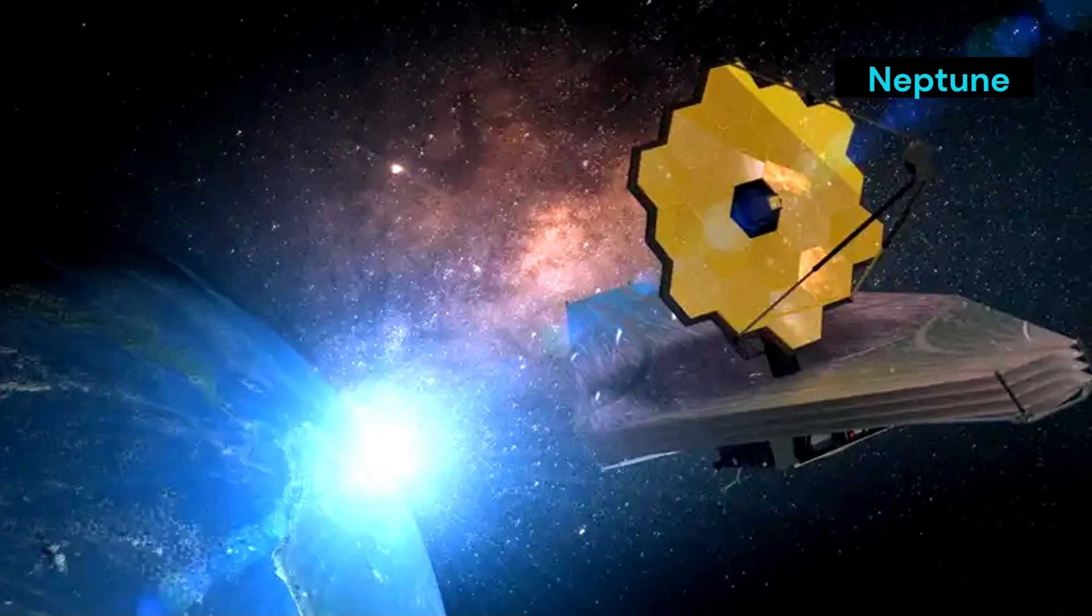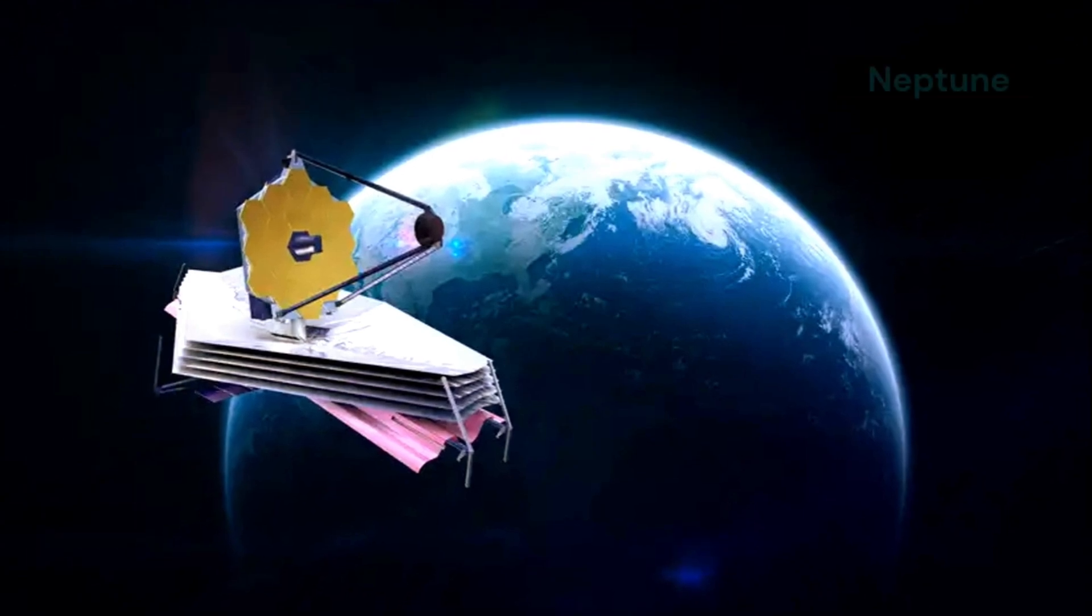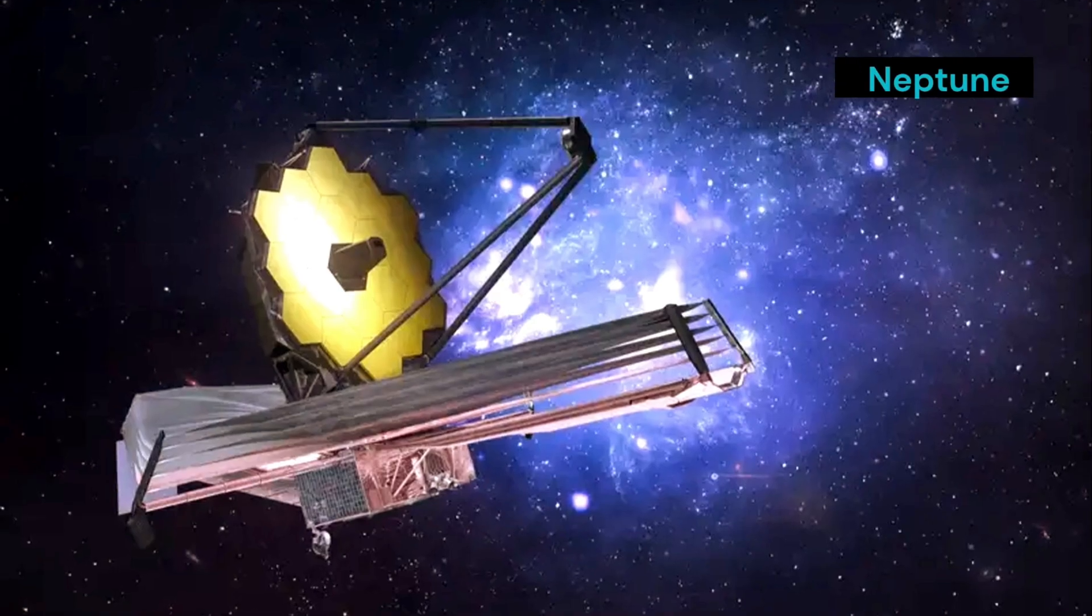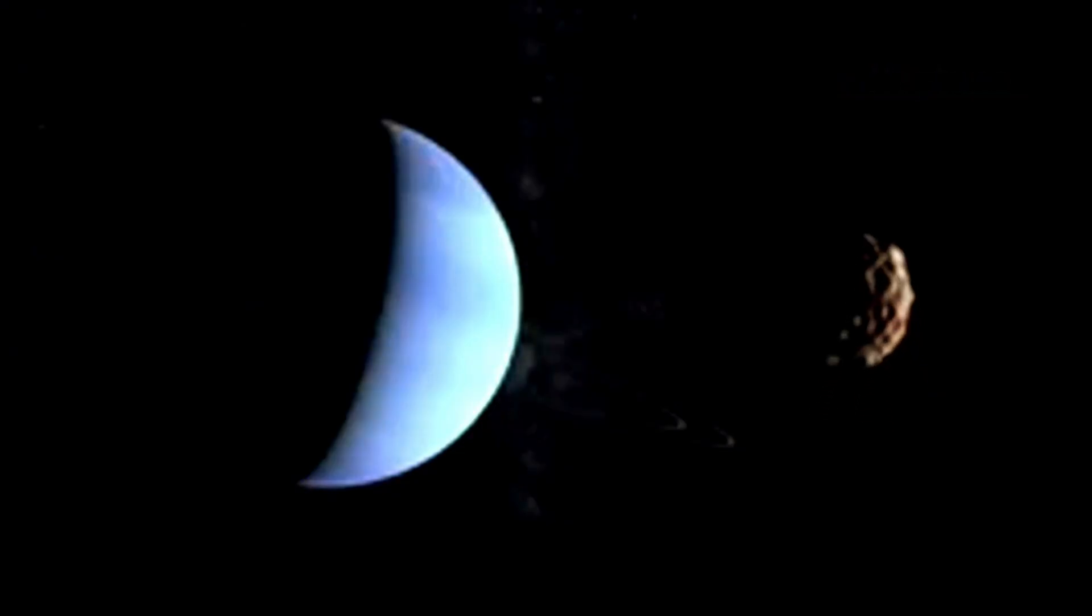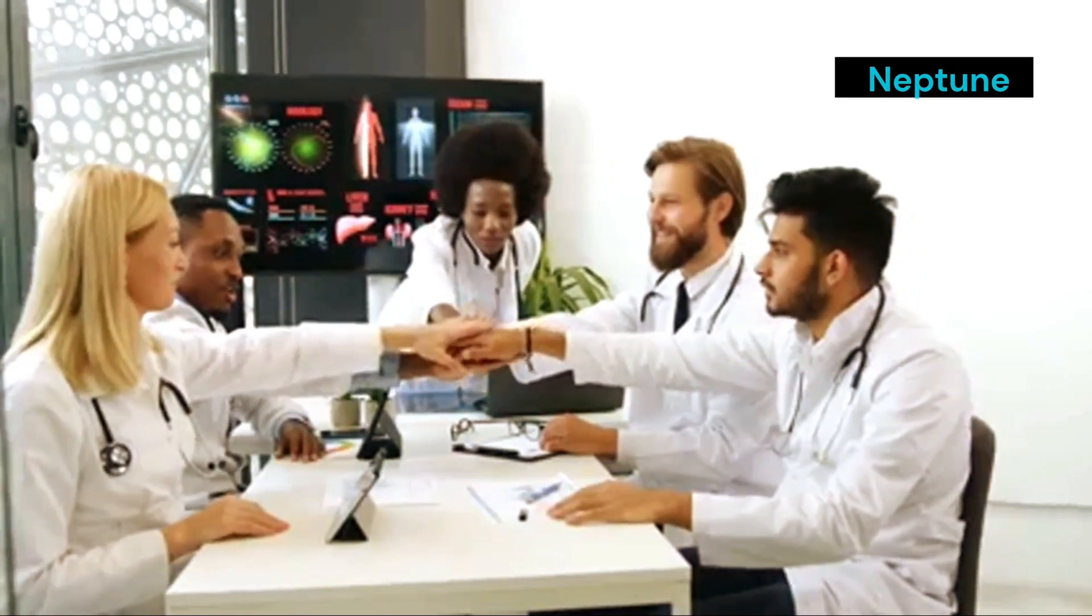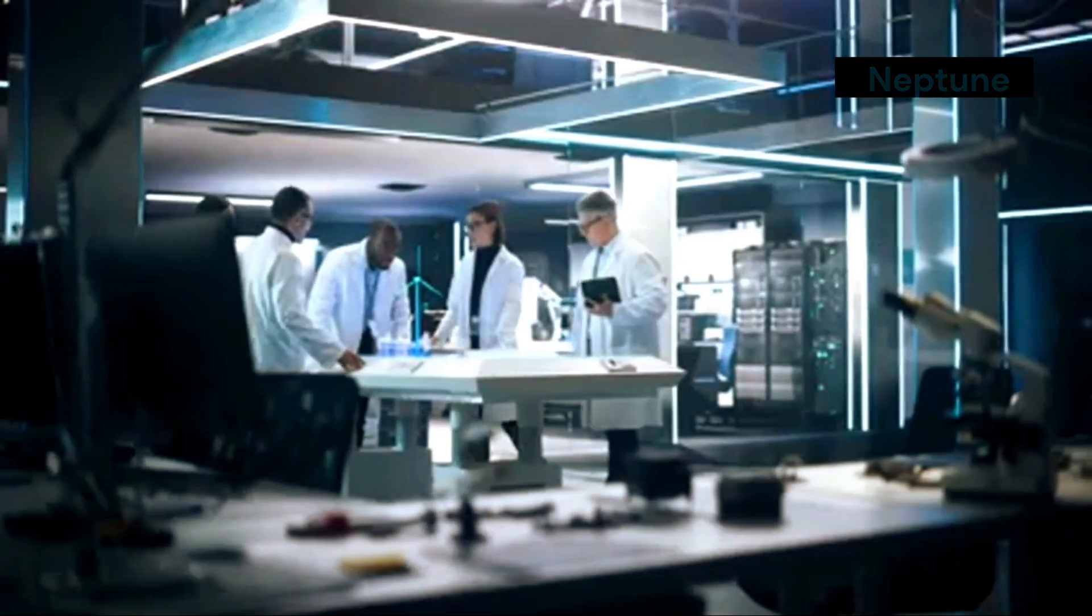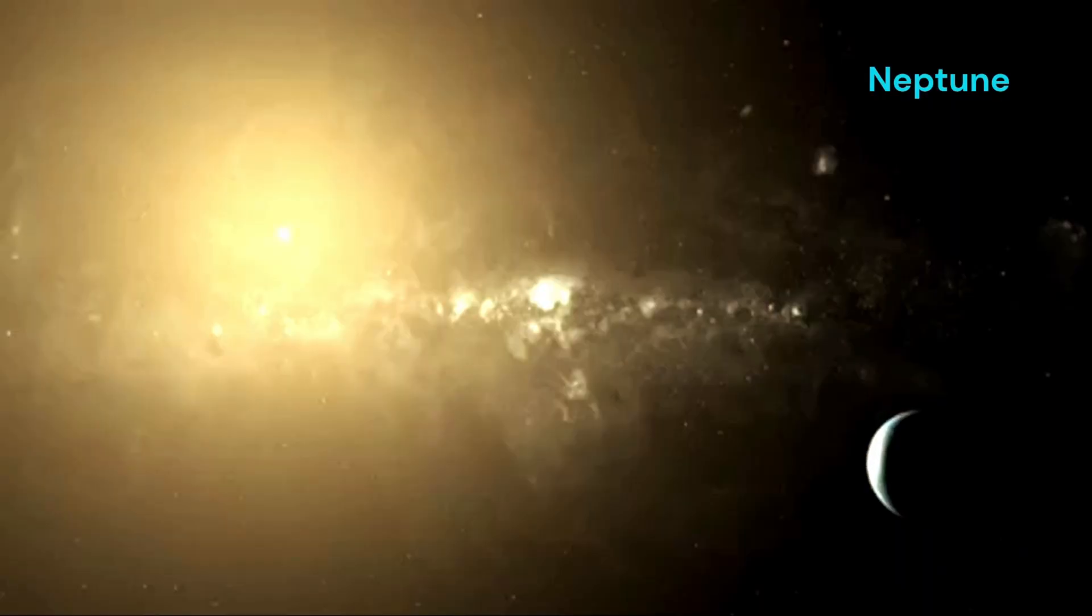The James Webb Space Telescope, or JWST, observed a massive collision. This state-of-the-art telescope, which has been a game-changer in space observation, captured something extraordinary. Something very large slammed into the planet Neptune. This collision was not just a minor event. It was a significant impact that has caught the attention of scientists worldwide. This event has sent ripples of excitement through the scientific community. Researchers are now poring over the data, trying to understand the implications of this collision. It offers a rare opportunity to learn about the outer reaches of our solar system.